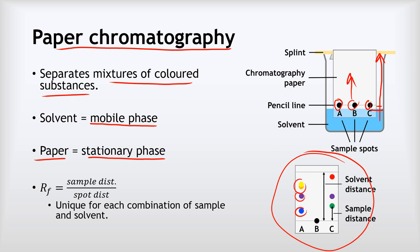The number of dots tells you the number of different substances in your sample. We can also do a calculation called Rf in which we divide the sample distance by the spot distance. That gives us a number from zero to one that is unique for any combination of sample and solvent, so we can use it to identify particular substances.